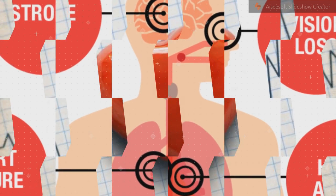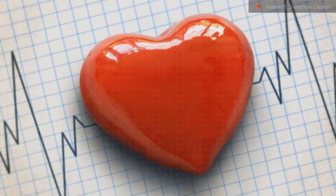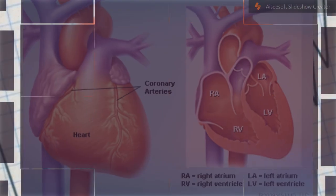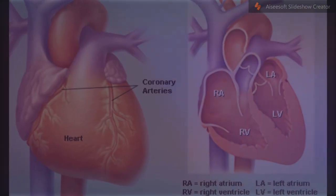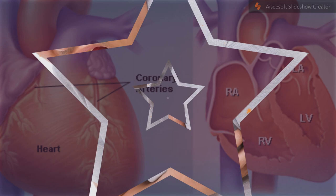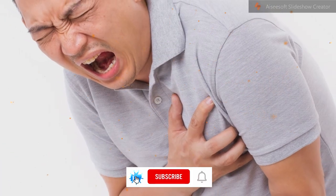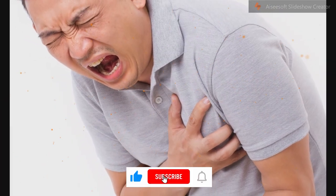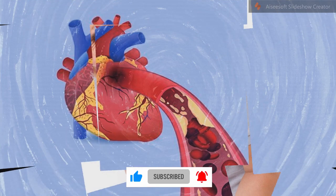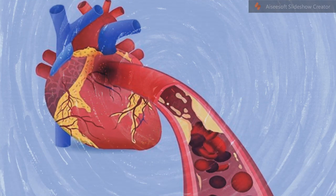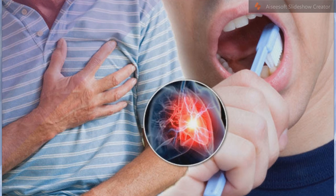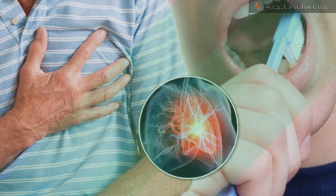Tissue death: If impaired blood flow to the heart lasts long enough, it triggers a process called the ischemic cascade. The heart cells in the territory of the blocked coronary artery die (infarction), chiefly through necrosis, and do not grow back. A collagen scar forms in their place.